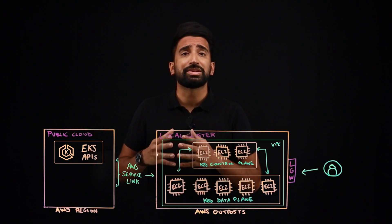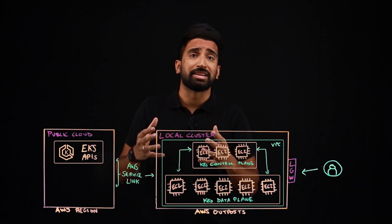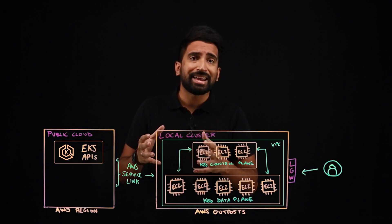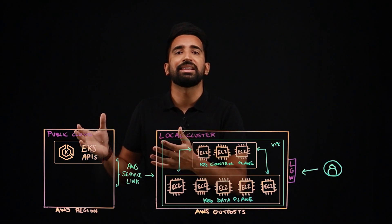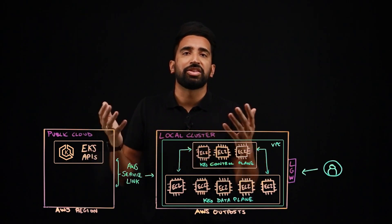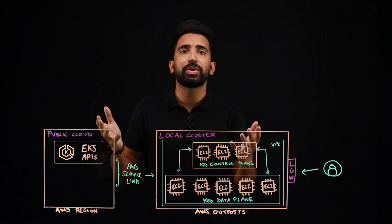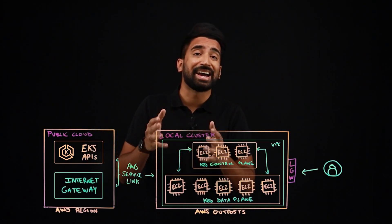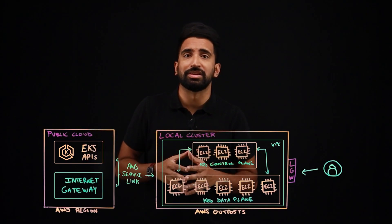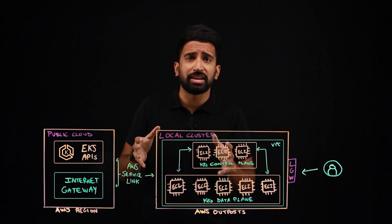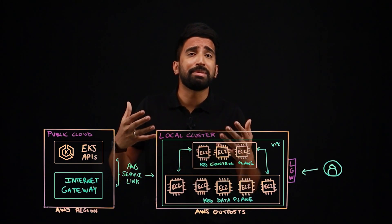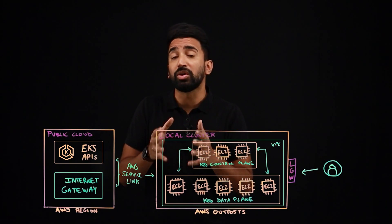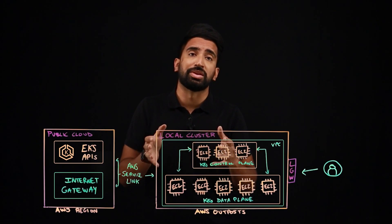This communication path enables EKS to manage the availability of the cluster running on the Outposts and surface a cluster in the EKS console, much like any other EKS cluster. It also enables outbound internet access for things like downloading ECR container images. The primary advantage with this architecture is that you can mitigate risk of application downtime resulting from network disconnections to the cloud.